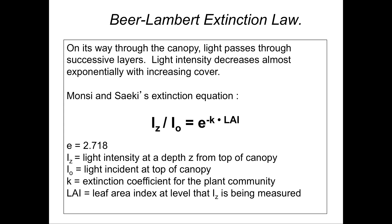The Beer-Lambert extinction law quantifies how, on its way through the canopy, light passes through successive layers and light intensity decreases as it encounters those layers, because those layers of leaves absorb light. This decrease is almost exponential as cover increases, and a couple of Japanese forest ecologists, Monsi and Saiki, described this with the following extinction equation.